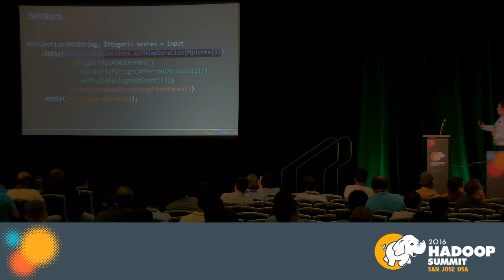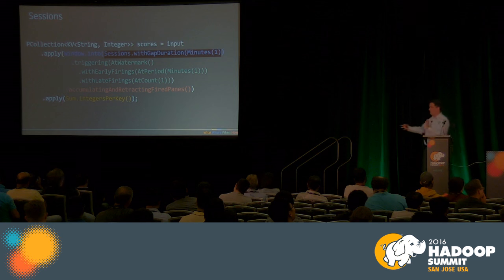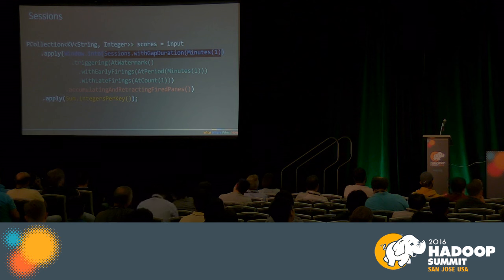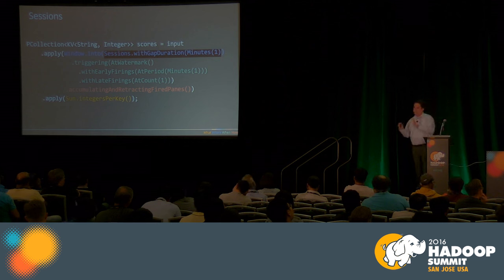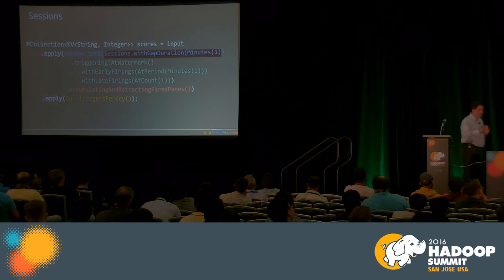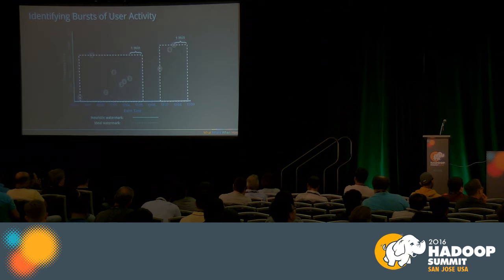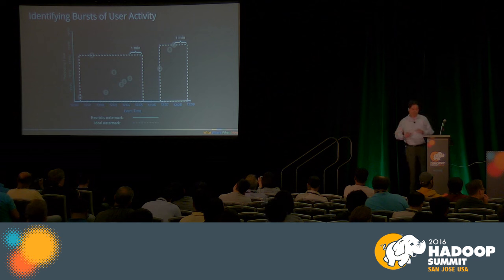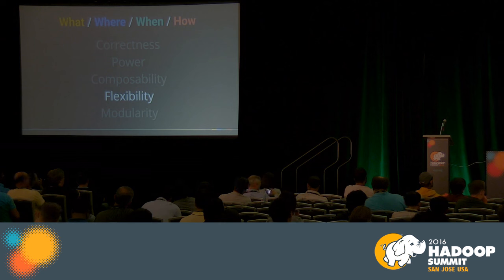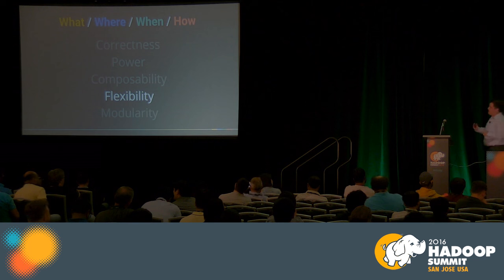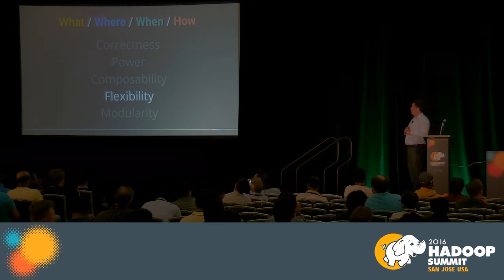Now for power. Session windows represent bursts of user activity. In this case, we window data in a data-dependent way — the window ends for each user when that user has not been active for, say, one minute — giving us variable-size windows. This is a really complex feature. Even more, window functions or window mappings can be user-defined. There is no predefined set of window functions.